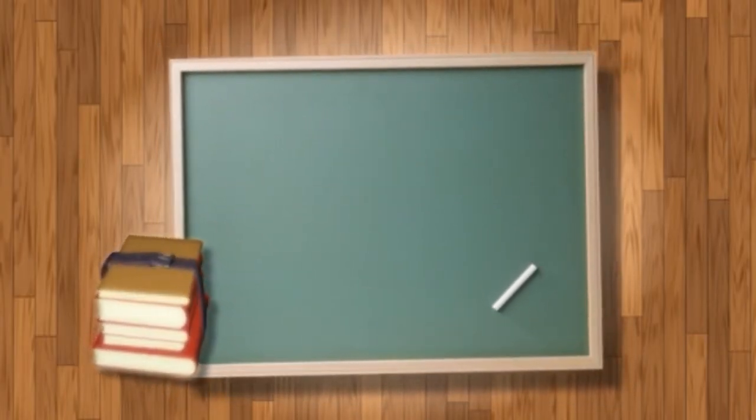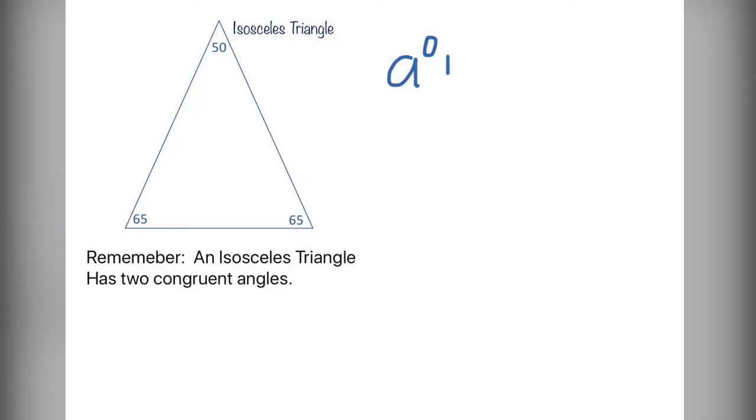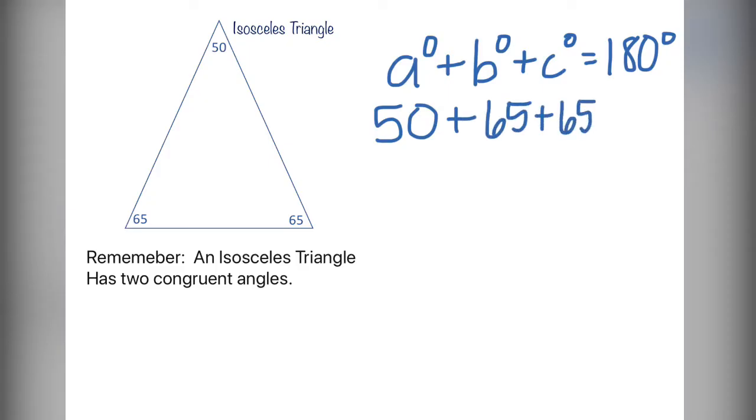Look at our first triangle. We have an isosceles triangle with measurements of 50, 65, and 65. Let's remember that an isosceles triangle has two congruent angles. The theorem states angle A plus angle B plus angle C will total 180 degrees. We fill in first what we know: 50, 65, and 65. That will total 180 degrees.